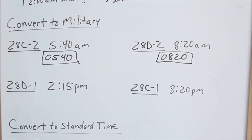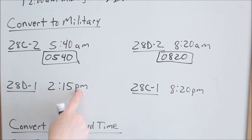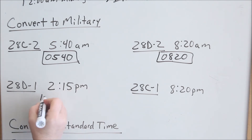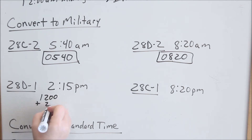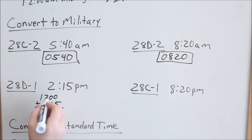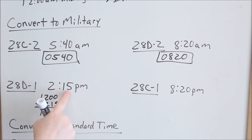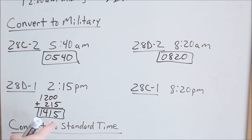Let's look at 2:15 p.m. P.m. means we are after 12 o'clock noon. 12 noon is the 12th hour of the day, so always remember that 12 noon is 1200 in military time. We need to be 2 hours past that, so take 1200 and add 215 — the 12 plus 2 would be 14, we're in the 14th hour of the day, and you still have your minutes. So 1415. For military time, there is no a.m. or p.m. because we're counting the hours of the day — no two times will be exactly the same.